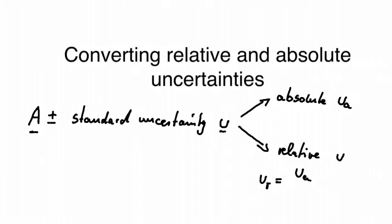Let's call the relative uncertainty U_R. We take the absolute uncertainty divide by A and multiply by 100, and then we get our relative uncertainty as a percentage. So one or two or five or ten percent or something like that.